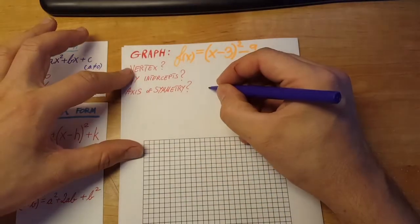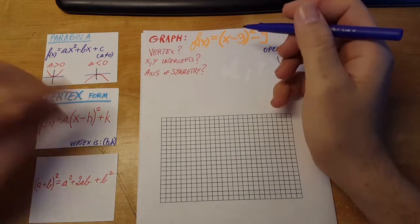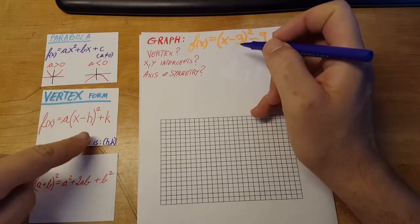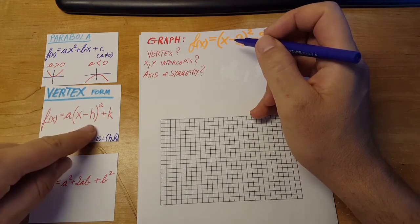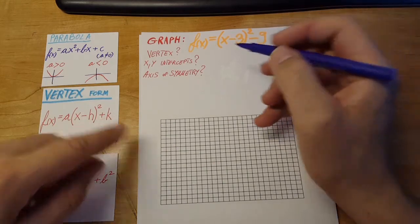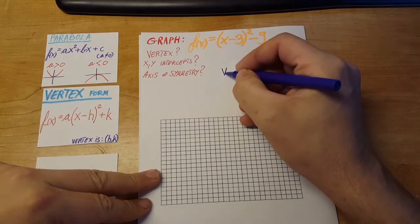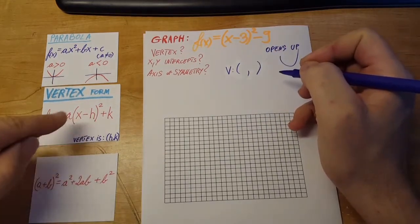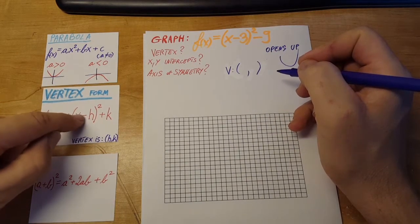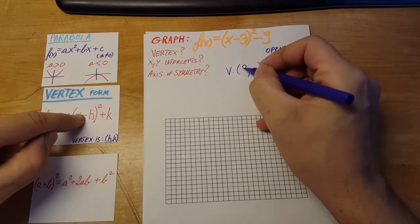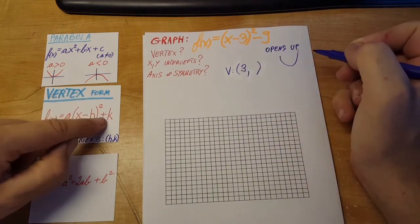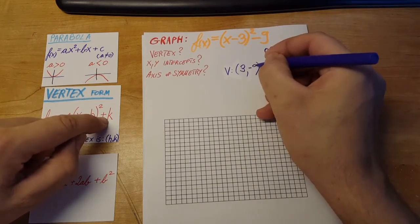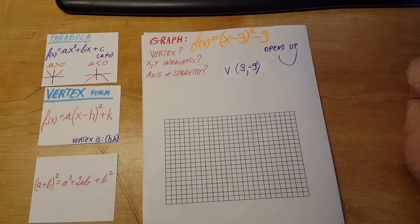Ok, the vertex. It's very easy to find. Since our function is in vertex form, we can just look at the h and the k, and that will give us the vertex. The h, the negative stays in the formula, so we'll take just the 3. Plus k, plus negative 9, so we'll take the negative 9. There you go, that's our vertex.